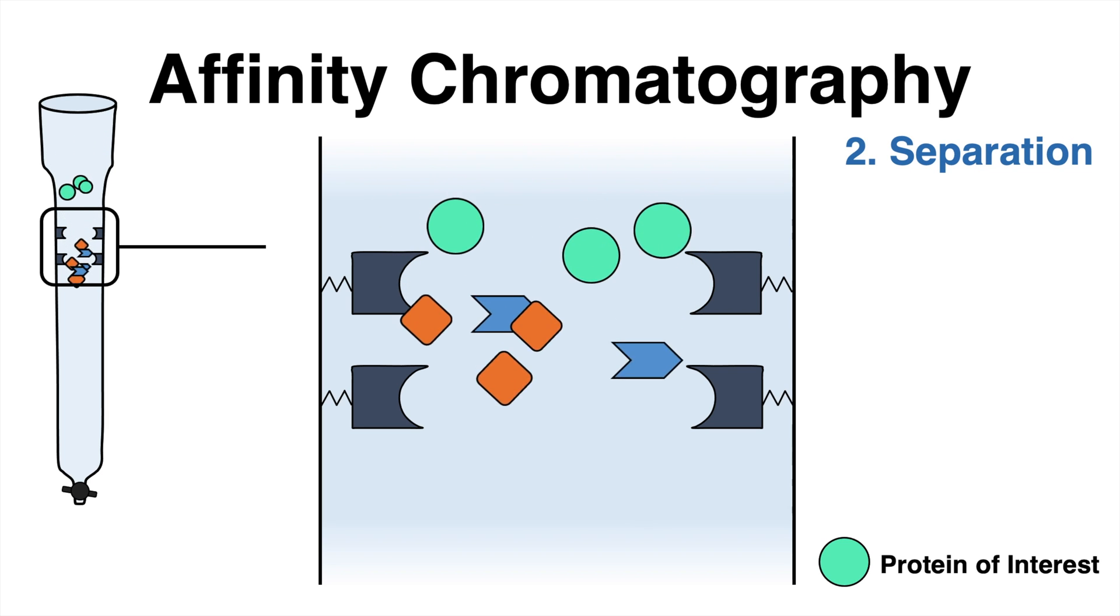Biomolecules with no affinity for the receptor will travel through the column and only the target protein will remain bound to its interaction partner. In other words, bound to the stationary phase.